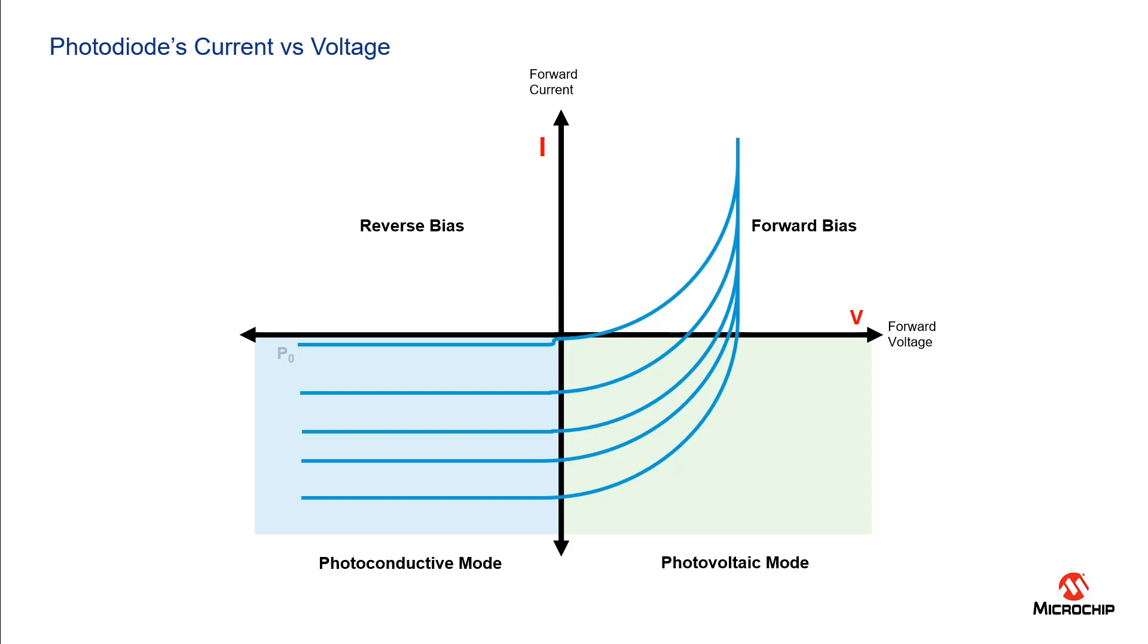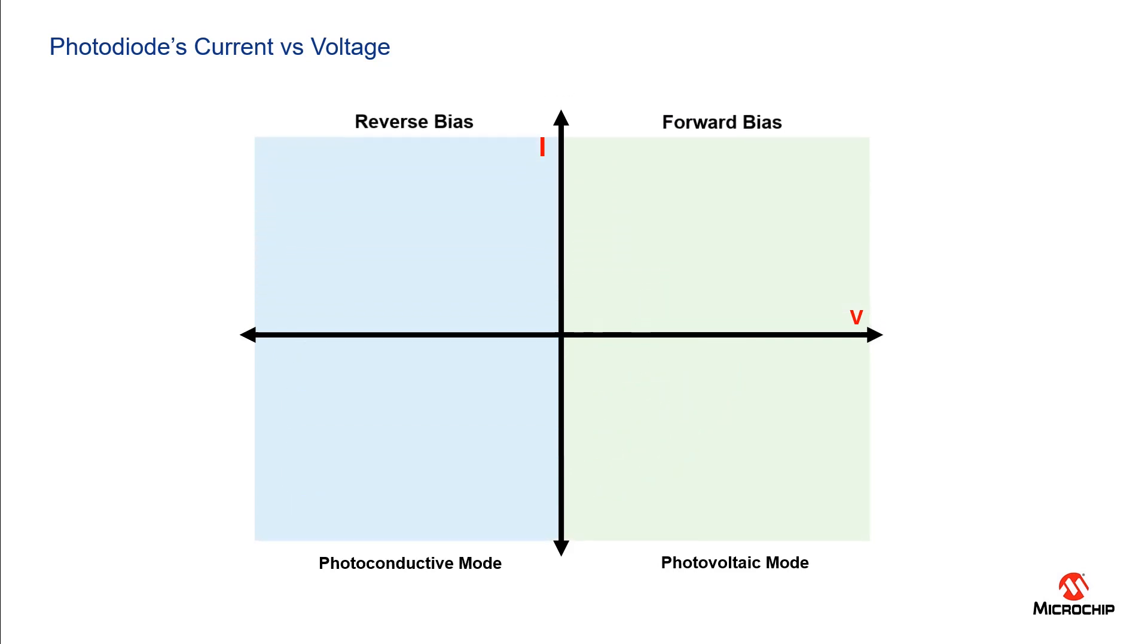On this chart P0 to P4 shows the current at different light levels where P0 represents the photodiode with no light on it so it is not generating any current and the curve looks like a standard diode. But even though there's no light there is a small leakage current that flows through the photodiode on the reverse bias conditions. This is called dark current.